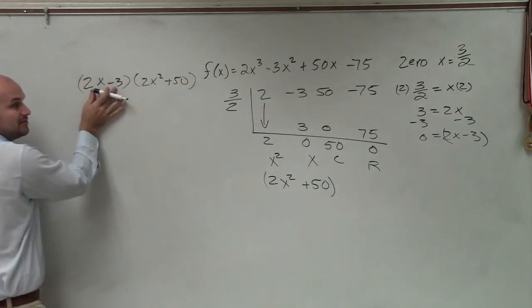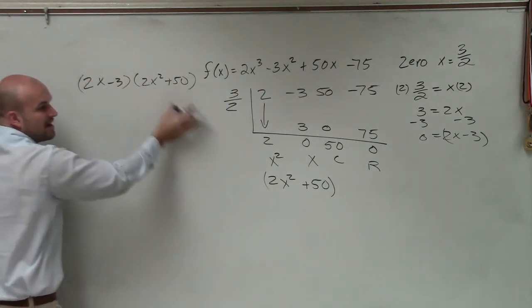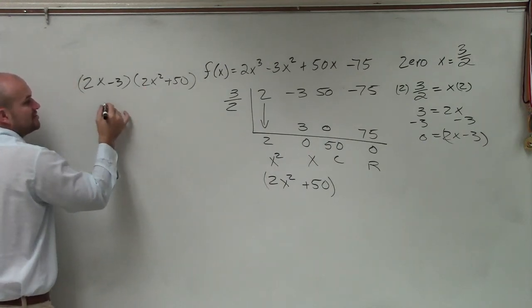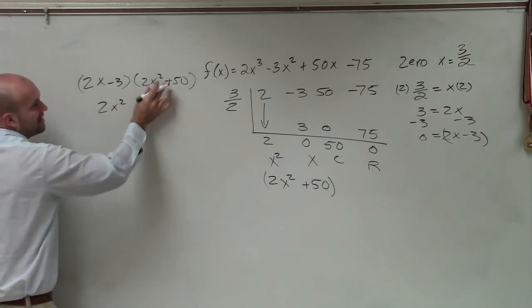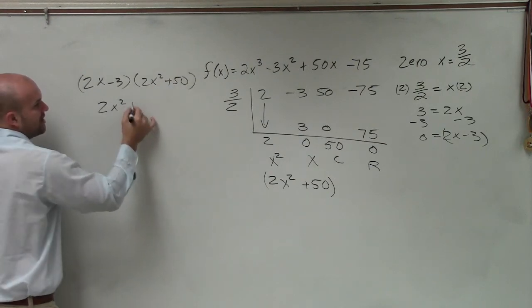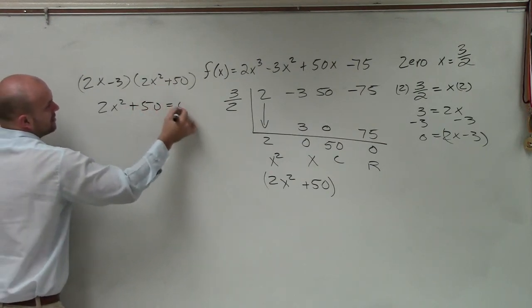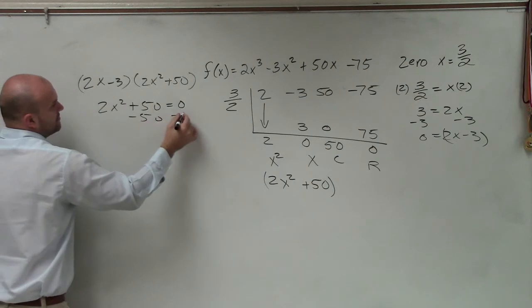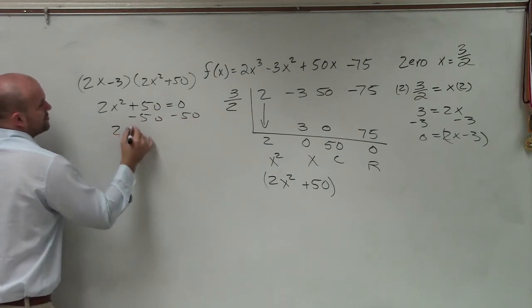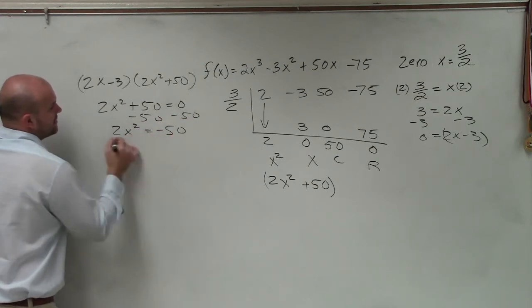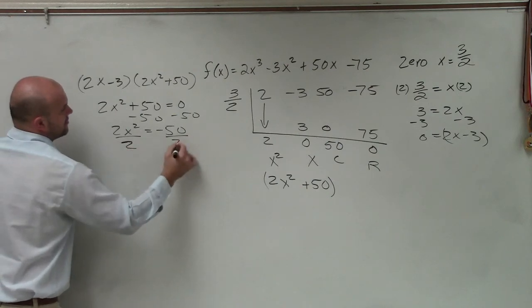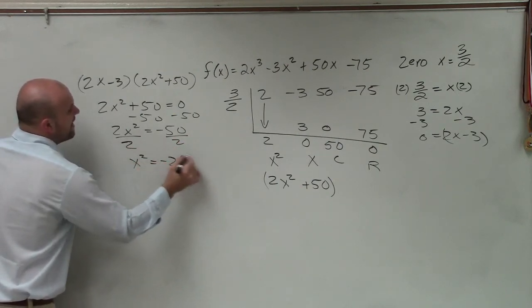Now we already set this one equal to zero. Next thing I need to do is set my quotient, this factor equal to zero, to find the other two zeros. And I can also factor that out to get it to linear factors. So to do that, I'll subtract 50. 2x squared equals negative 50. Divide by 2. x squared equals negative 25.